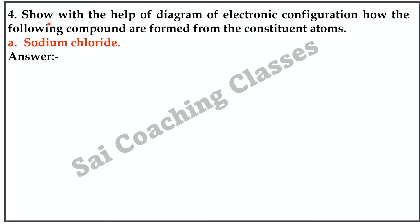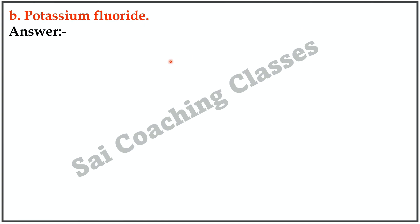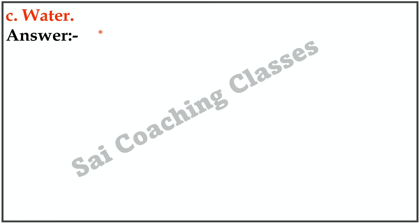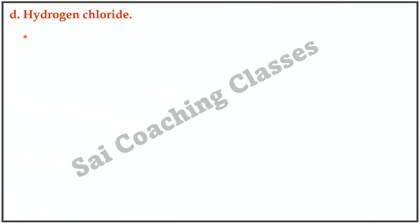Question Number 4: Show with the help of a diagram of electronic configuration how the following compounds are formed from their constituent atoms. A. Sodium chloride — Na and Cl combine to form NaCl. B. Potassium chloride — diagram shows how KCl is formed. C. Water — H2O is formed by a covalent bond. D. Hydrogen chloride — HCl is formed similarly.